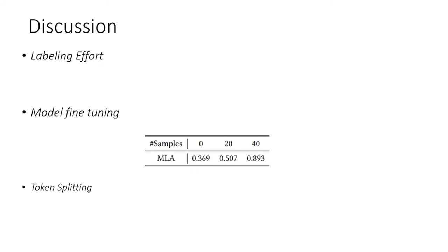Regarding token splitting, we split tokens in raw log messages according to special symbols such as spaces, tabs, and commas. Nevertheless, some log tokens are difficult to split due to the complexity of the log message. In our future work, we will design effective mechanisms to handle these hard cases. That's all. Thank you.